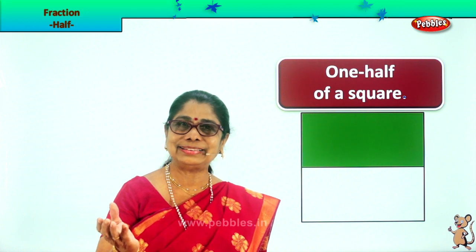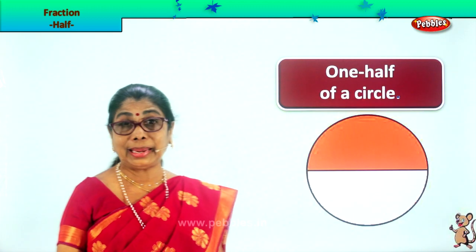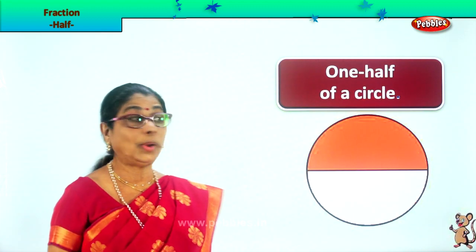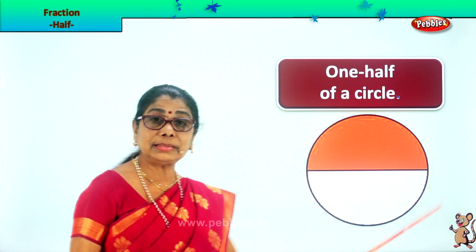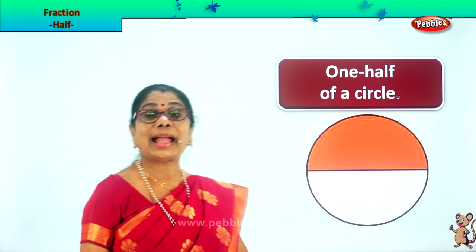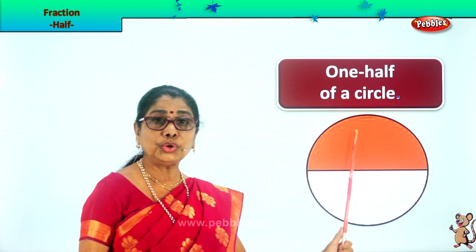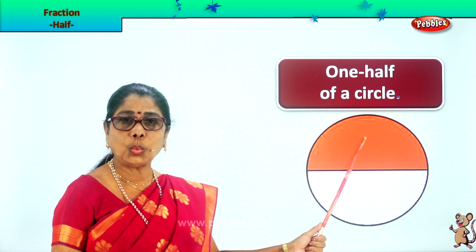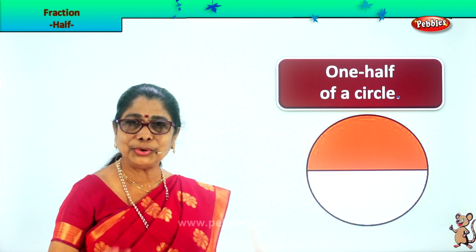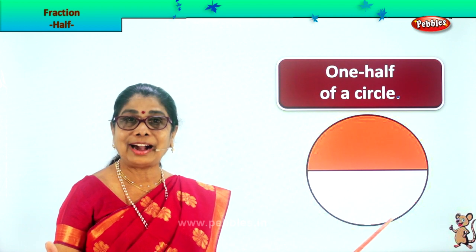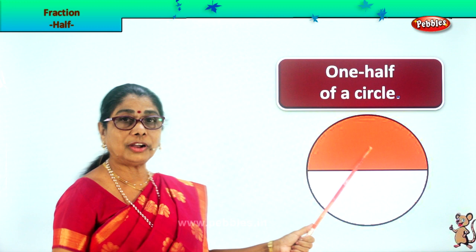Let's take another shape and look at how we get the one half — one half of a circle. This is the whole circle, and we cut this circle by putting a line in between, making two perfect halves. One half of a circle, one half of a circle. We have cut it into two equal halves, so this is called one half of a circle.